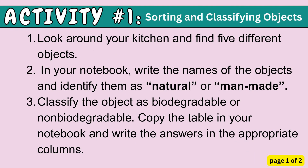Activity number 1: Look around your kitchen and find 5 different objects. In your notebook, write the names of the objects and identify them as natural or man-made. Then classify each object as biodegradable or non-biodegradable. Copy the table in your notebook and write the answers in the appropriate columns.